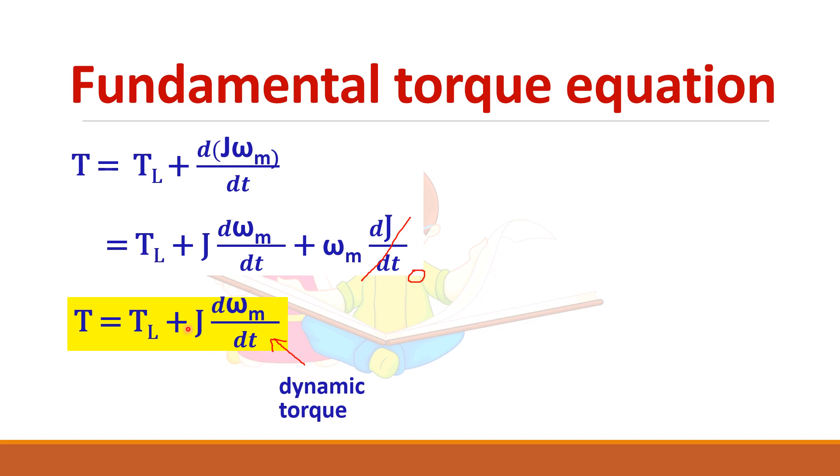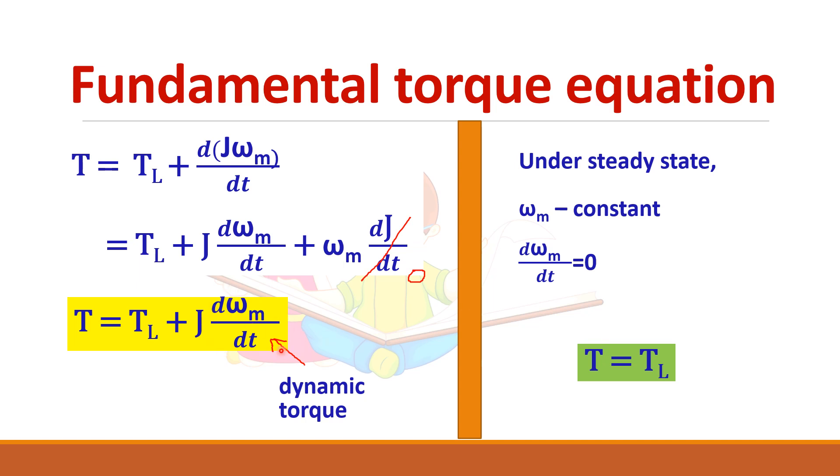This term is called the dynamic torque. It will be present only during transient conditions. So let us see the steady state condition. At steady state you have attained some constant speed, so ωm is constant, therefore dωm/dt equals zero. So this term becomes zero. So T equals TL. It means that motor torque is equal to load torque under steady state condition. This is the fundamental torque equation. Under transient condition you have dynamic torque; under steady state that dynamic torque becomes zero.